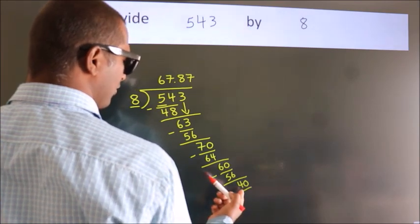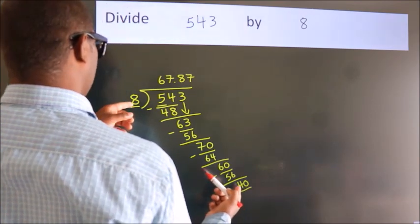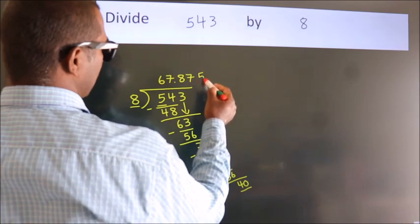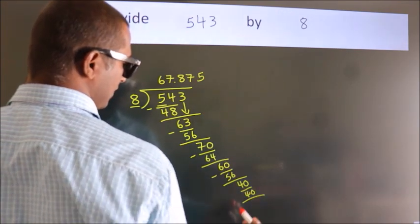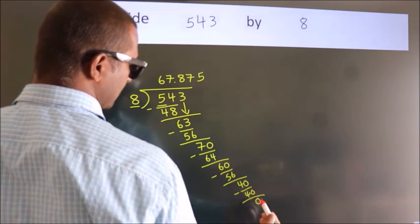When do we get 40 in the 8 table? 8 times 5 equals 40. Now we subtract. We get 0.